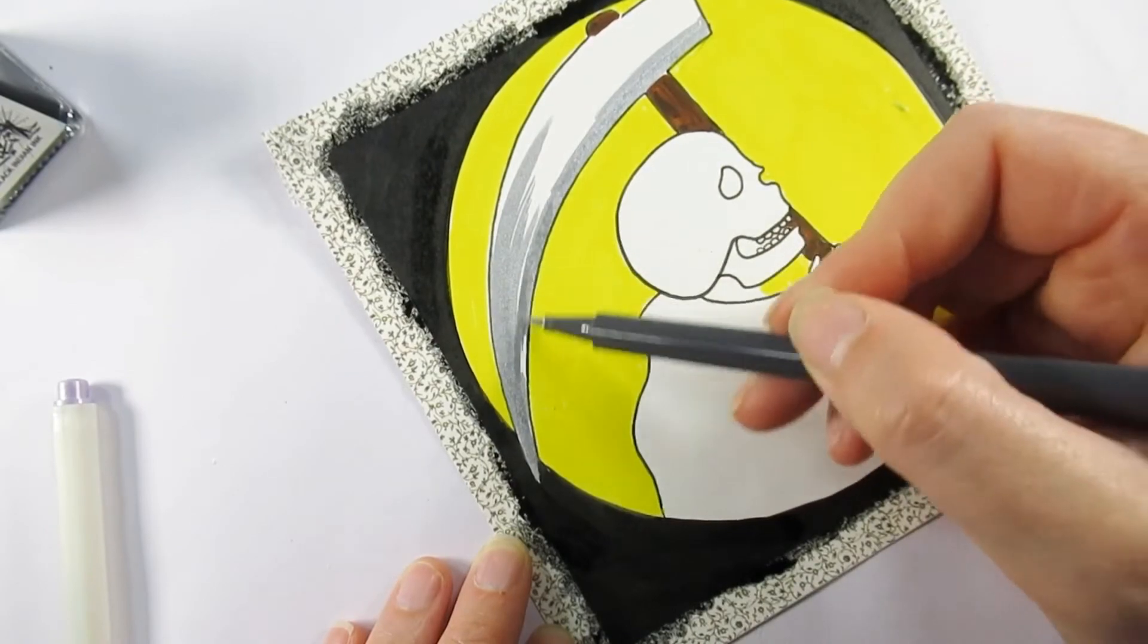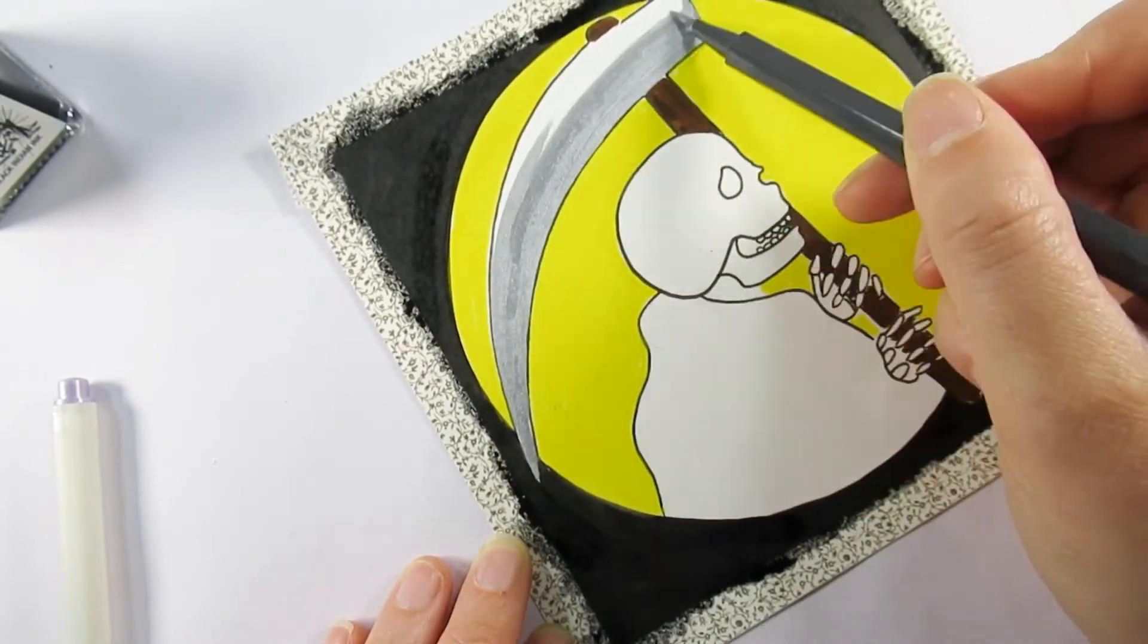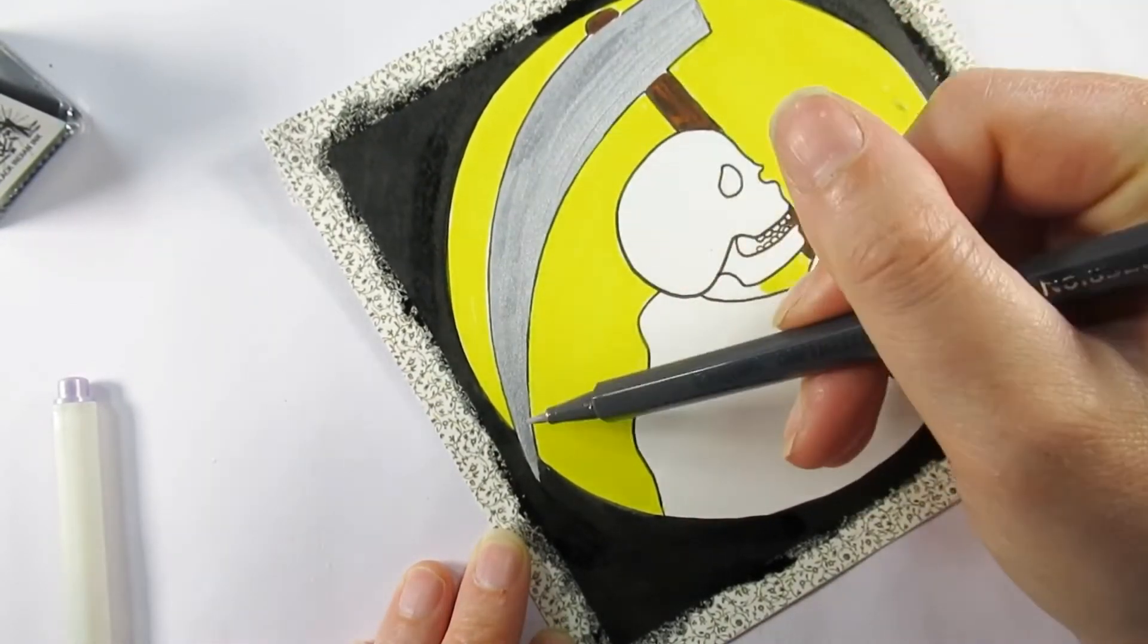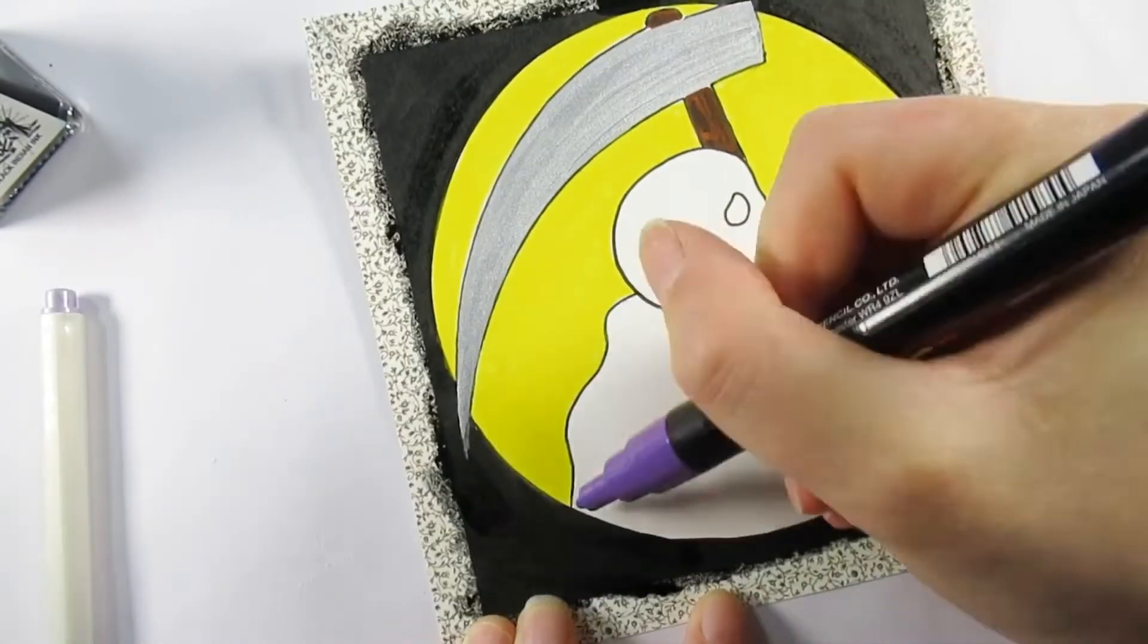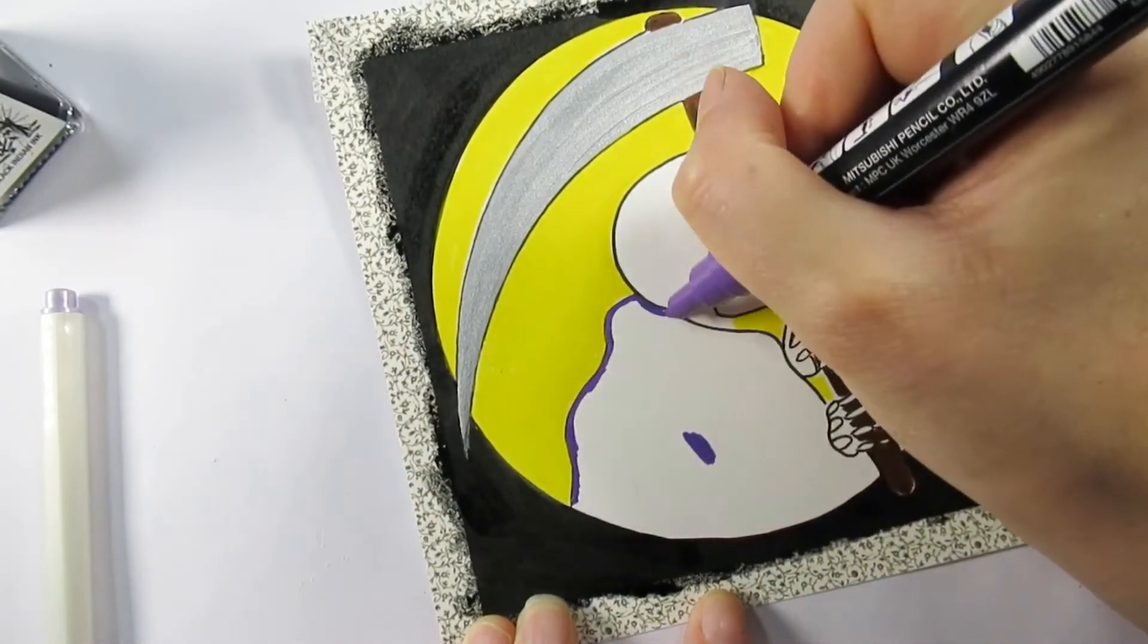I've used a silver metallic pen for the scythe, although it doesn't massively show up as much as I wanted. But it is on white paper and that tends to happen.